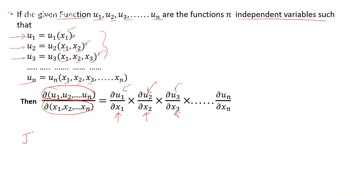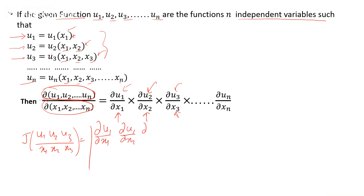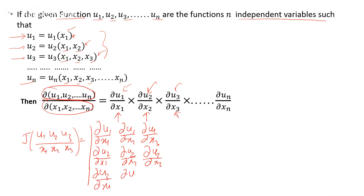The Jacobian of u1, u2, u3 with respect to x1, x2, x3 is written as the determinant with entries: partial derivatives of u1 with respect to x1, x2, x3 in the first row; partial derivatives of u2 with respect to x1, x2, x3 in the second row; and partial derivatives of u3 with respect to x1, x2, x3 in the third row.